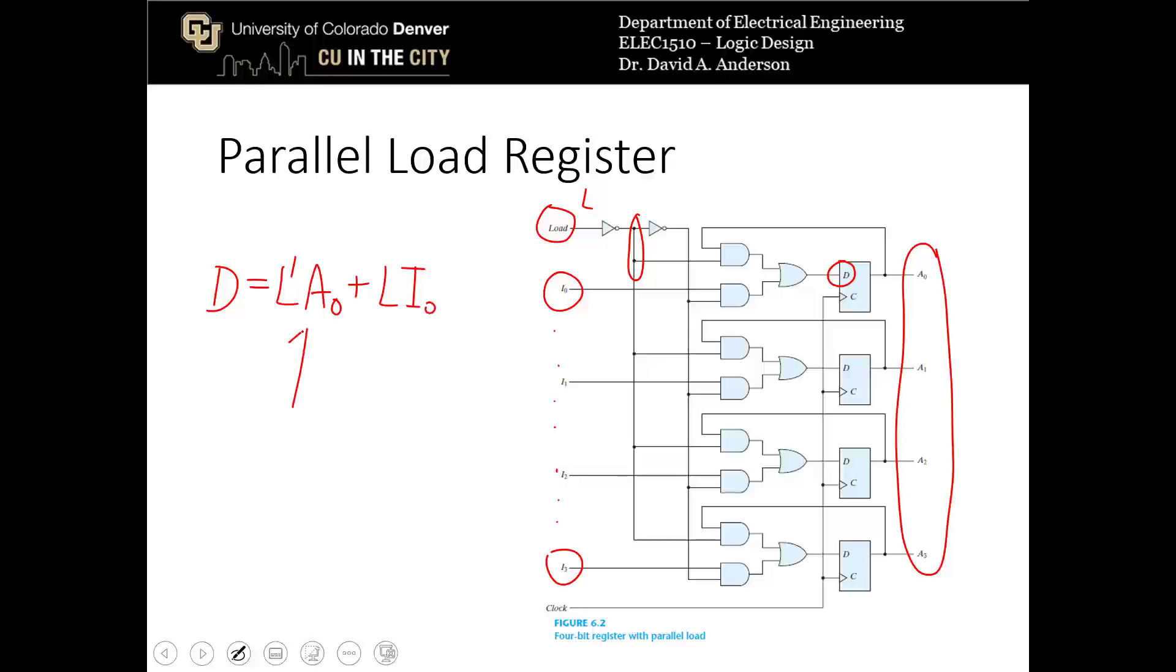Now you can see that in this case when L is a 0, D is equal to A0 and so it maintains the data that it used to have. As long as the load wire is kept at logical 0, the flip-flop outputs and the register outputs will maintain the data that they had. Now if L goes to a 1, then you load in new data from the input lines I0 through I3.